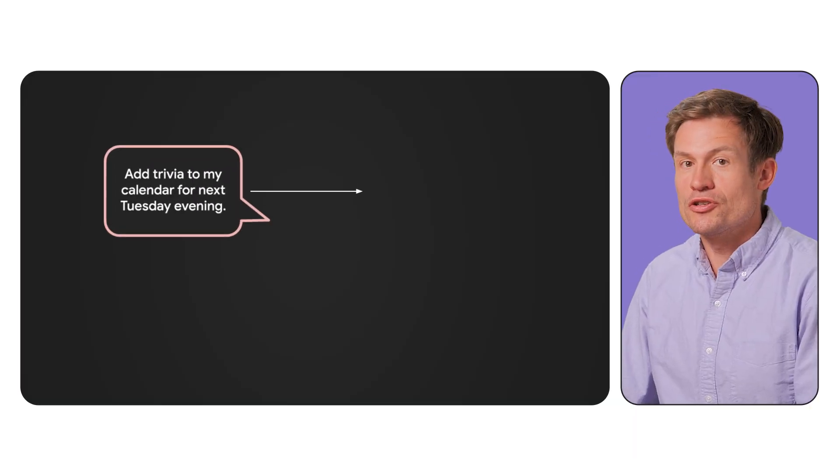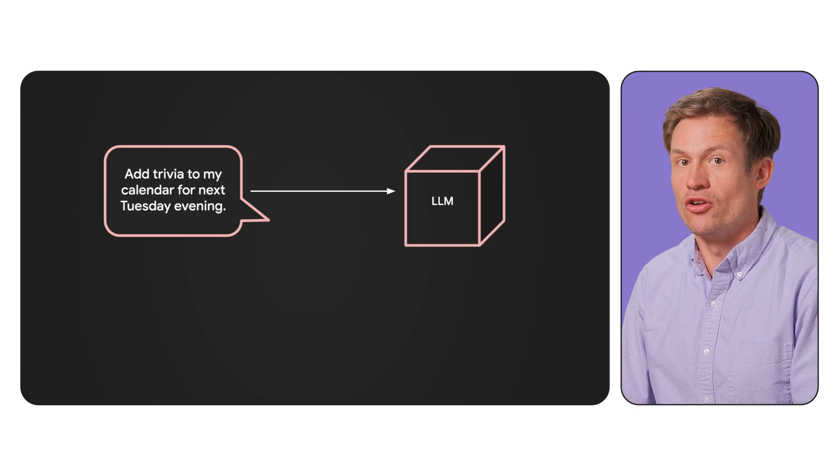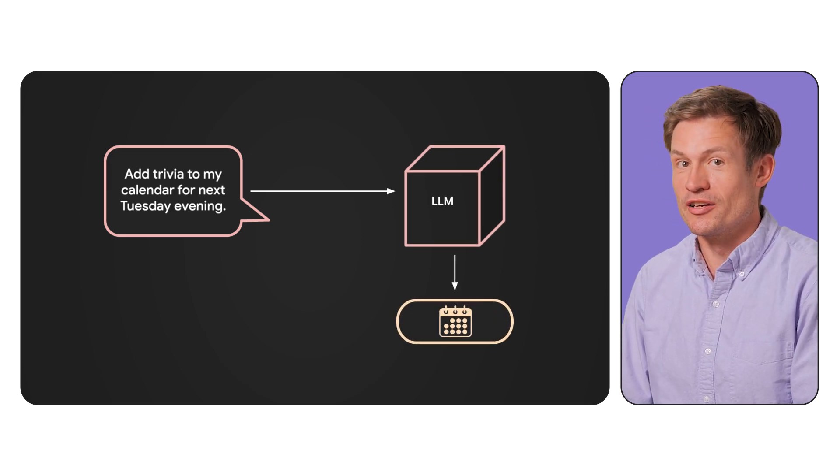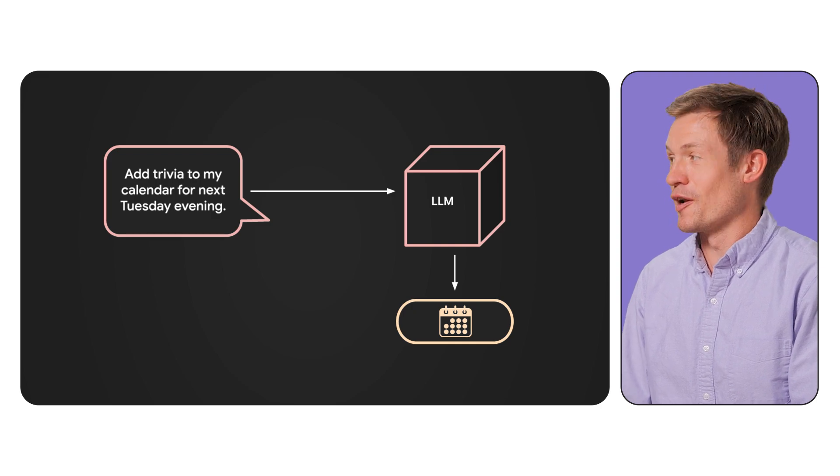So let's break it down. What is function calling? Function calling is a technique where you can make the LLM aware of specific methods or functions in your code and their signatures. The LLM can then respond to prompts with a request to call a specific function with specific parameters instead of just replying with text or maybe an image. So function calling allows me to have the LLM call a create-new-appointment function in response to a prompt like, "Add trivia to my calendar for next Tuesday evening." That's exactly it.